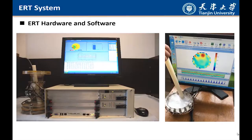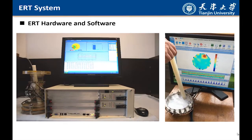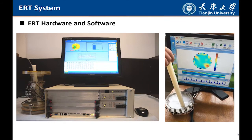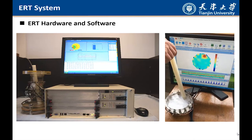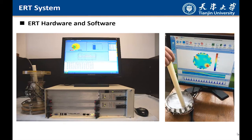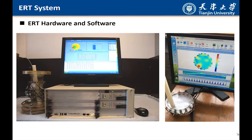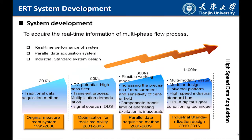The collaboration is based on electrical resistance tomography — the core technology of this collaboration project. You can see from the slides that we can reconstruct the dynamic distribution of different objects in the sensing field. This system has been developed for years, and the acquisition speed has been increased from 20 frames per second to 1400 frames per second. It is a multi-modality tomography system based on modular design.